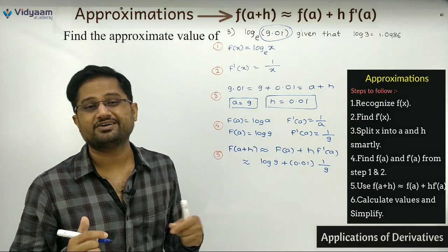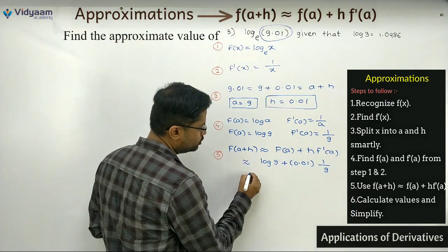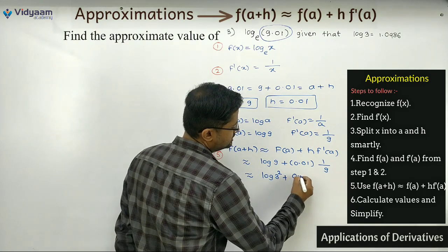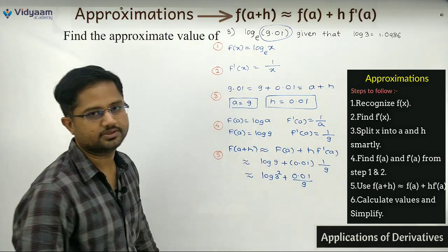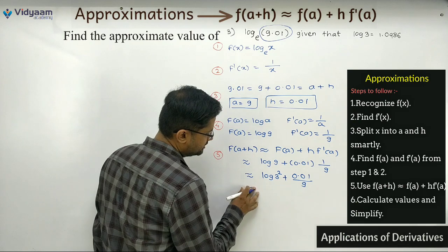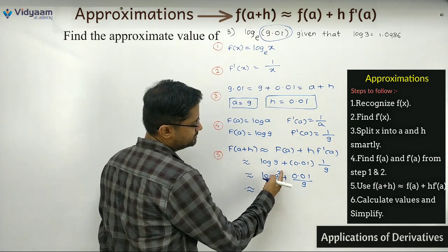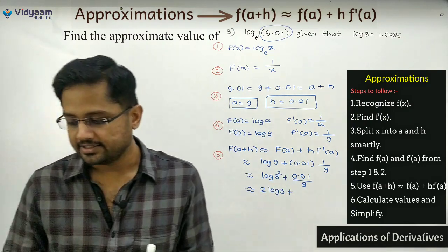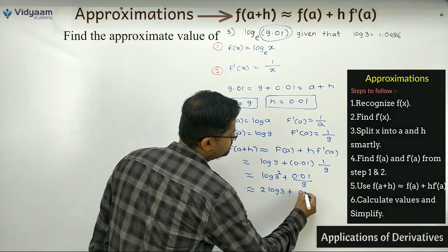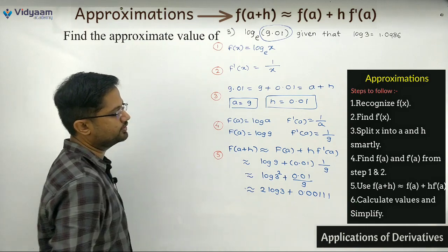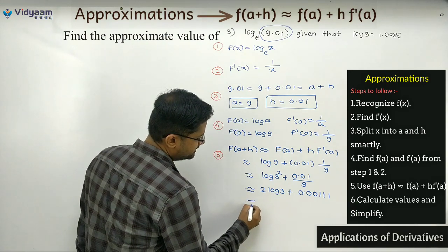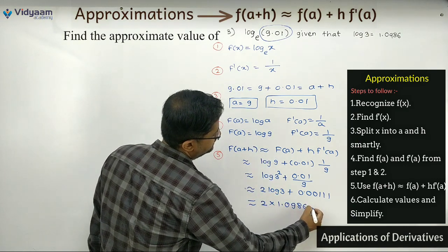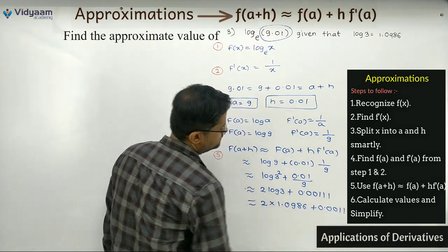We don't have the direct value of log 9, so write log 9 as log(3²). Also, 0.01 divided by 9 = 0.00111. Using the log property, the index comes forward: 2 log 3 + 0.00111. Substituting log 3 = 1.0986 (as given): 2 × 1.0986 + 0.00111.